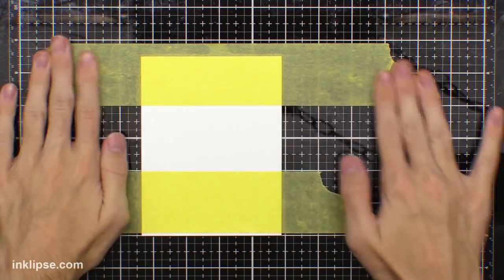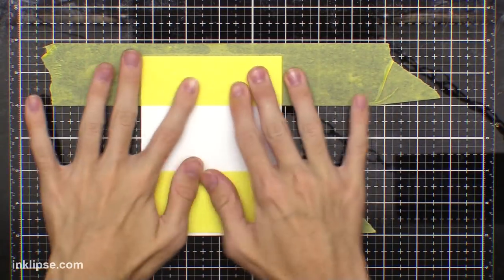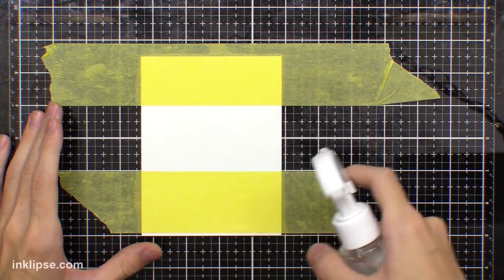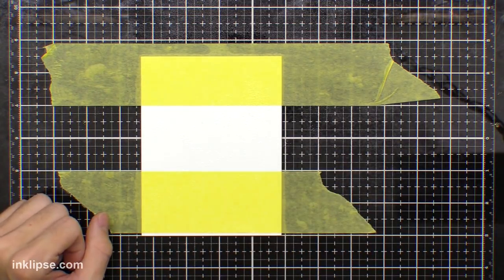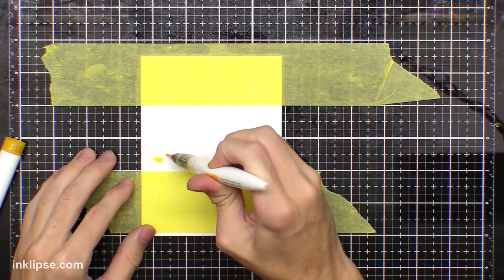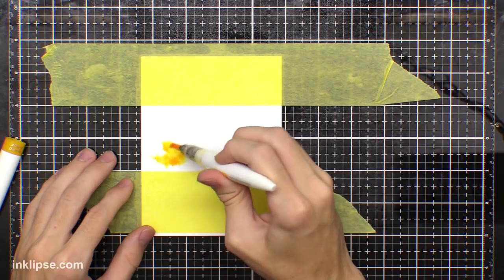Now you could totally mask off the rest of the card base and stamp all along that with the sentiment but I decided later on that the craft cardstock was a little bit better. So I'm going to spray this down with some water here to make sure that it's super nice and wet and this will help all those colors move and kind of blend together.